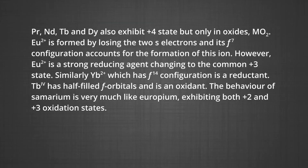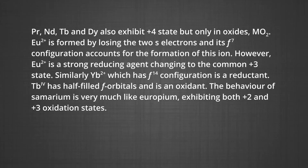Cerium, protoactinium, neodymium, terbium and dysprosium also exhibit the +4 state, but only in oxides of the type MO₂. Europium in the +2 state is formed by losing the 2s electrons, and its f⁷ configuration accounts for the formation of this ion. However, europium in the +2 state is a strong reducing agent, changing to the common +3 state. Similarly, terbium in the +2 state, which has an f¹⁴ configuration, is a reductant, while terbium in the +4 state has half-filled f orbitals and is an oxidant. The behaviour of samarium is very much like europium, exhibiting both +2 and +3 oxidation states — again, a frequently asked question.